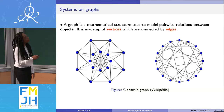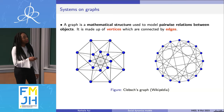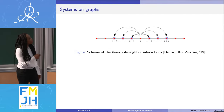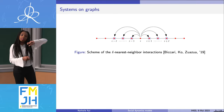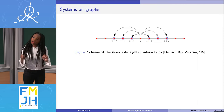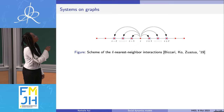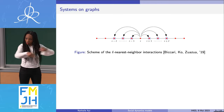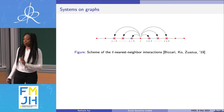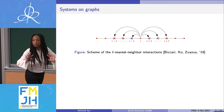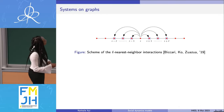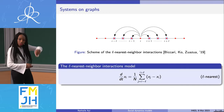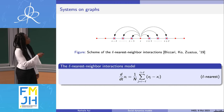Let me show you an example of a system I'm interested in: what we call the L-nearest neighbor interaction. We say that when considering agent i, it can only interact with the L agents to its right and the L agents to its left. For instance, imagine all of us in a straight line — you can only interact with the two people to your right and the two people to your left, and no one else. If you write the equation, it's simply a sum over all the agents you can interact with — the L to your left and the L to your right.